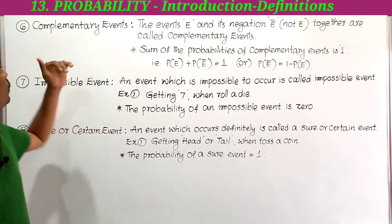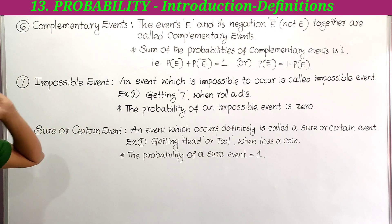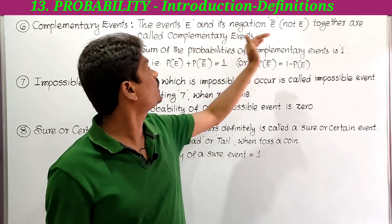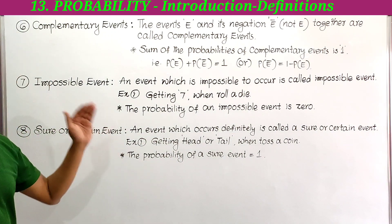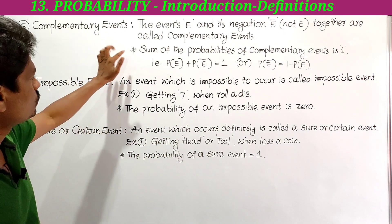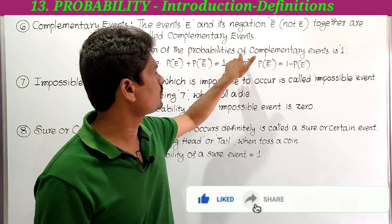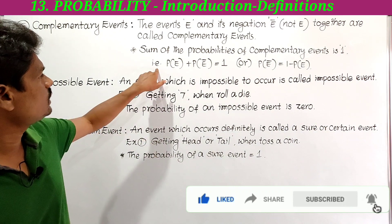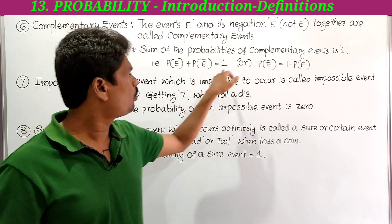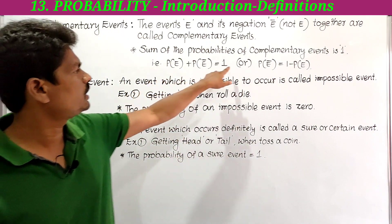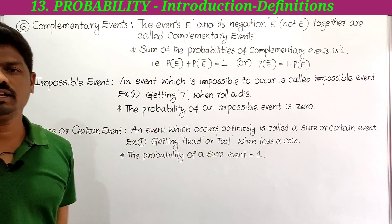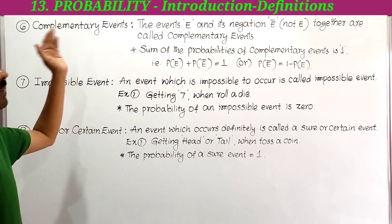Next, complementary events. The event E and its negation 'not E' together are called complementary events. The sum of the probabilities of complementary events is 1, that is: P(E) + P(not E) = 1. Or we can write P(not E) = 1 − P(E).